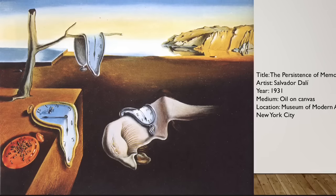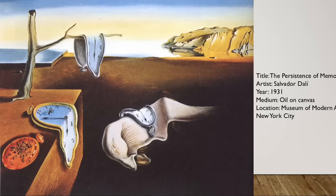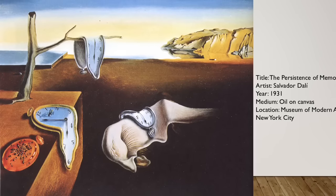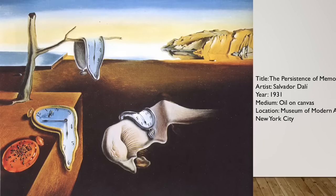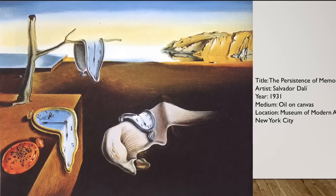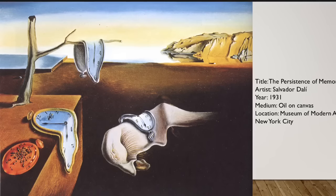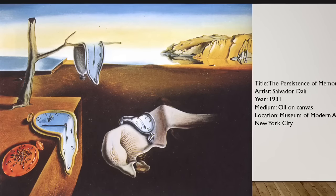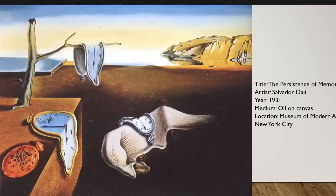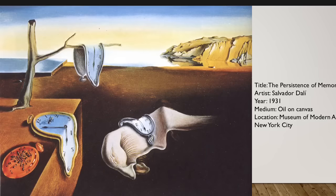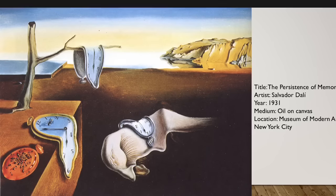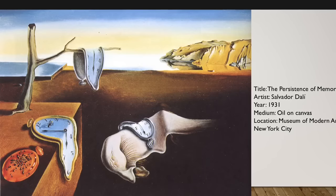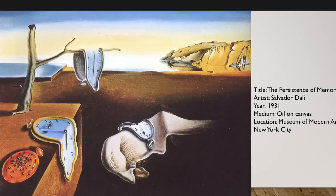Some other names the painting goes by — which are actually wrong — are The Soft Watches, The Melting Watches, or The Persistence of Time. The Persistence of Memory, though, is the only accurate title. This painting has been referenced numerous times in pop culture, TV shows, and songs.